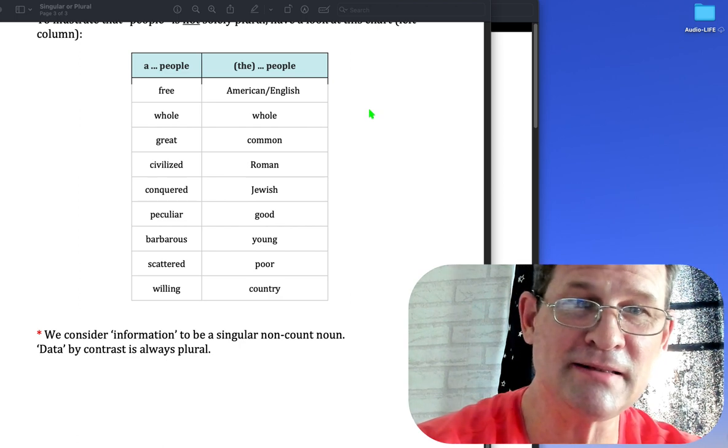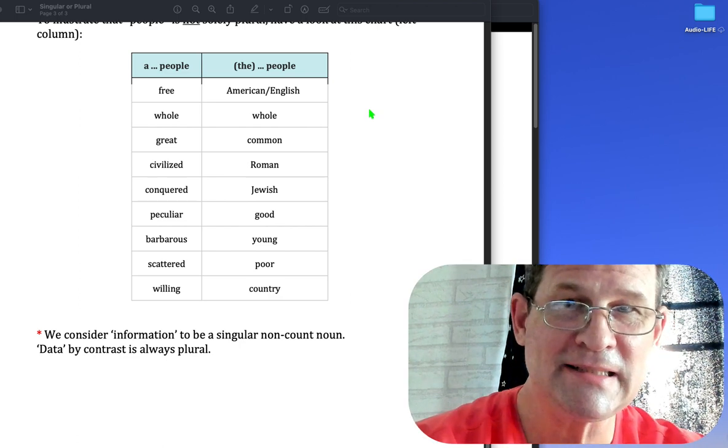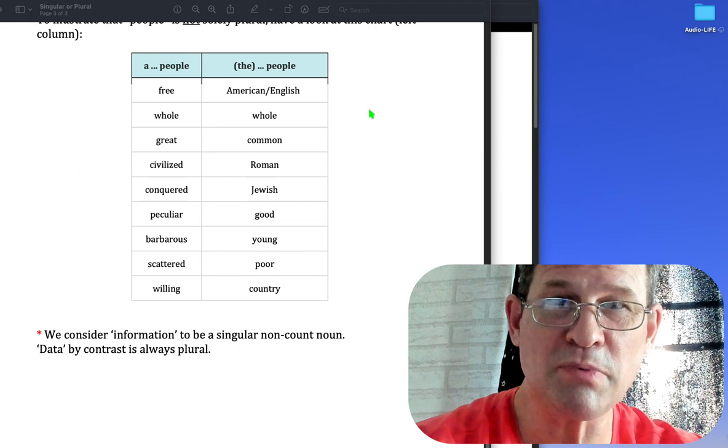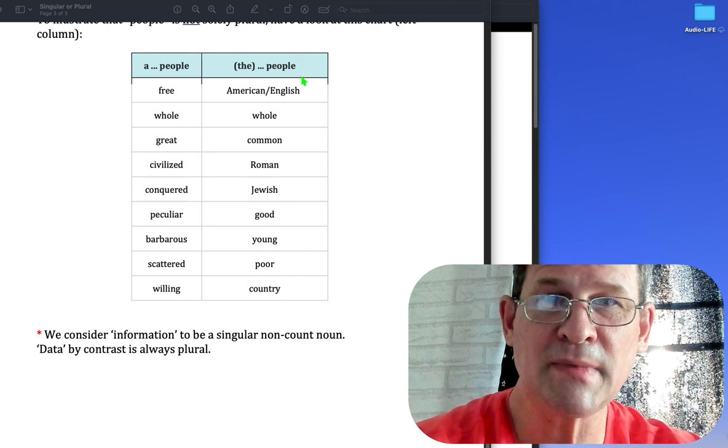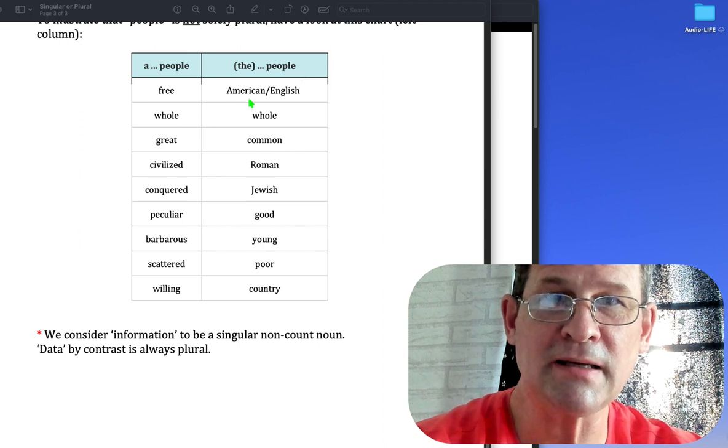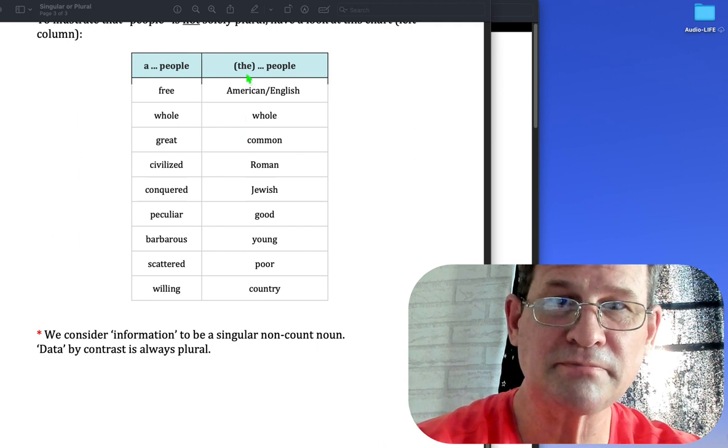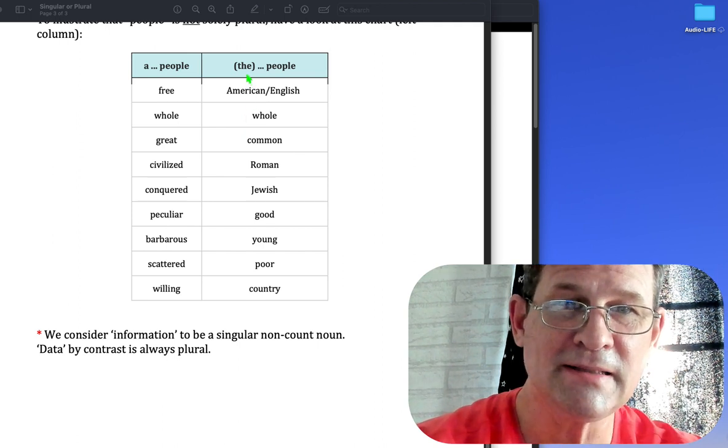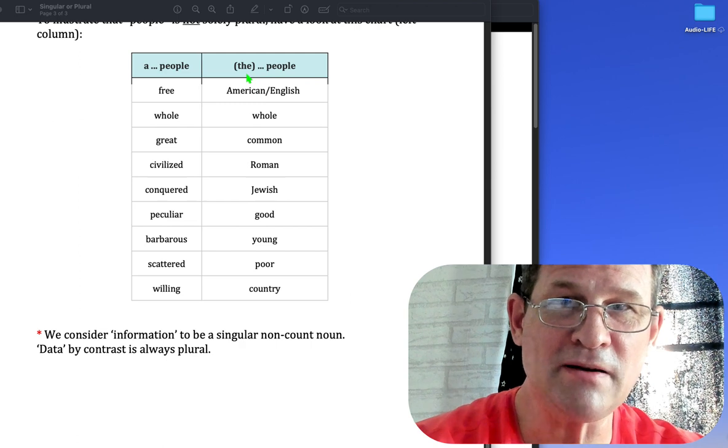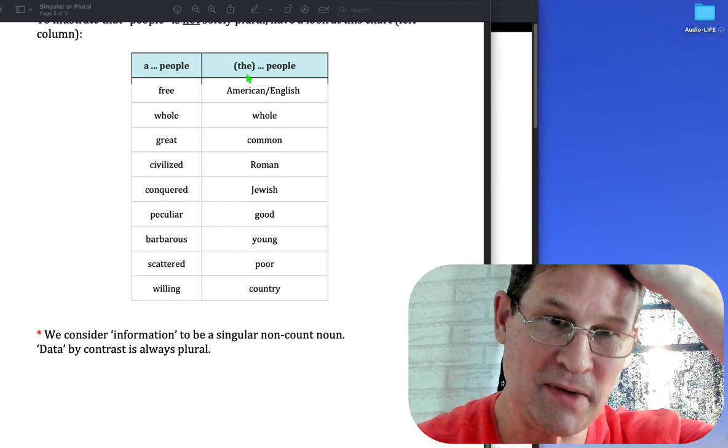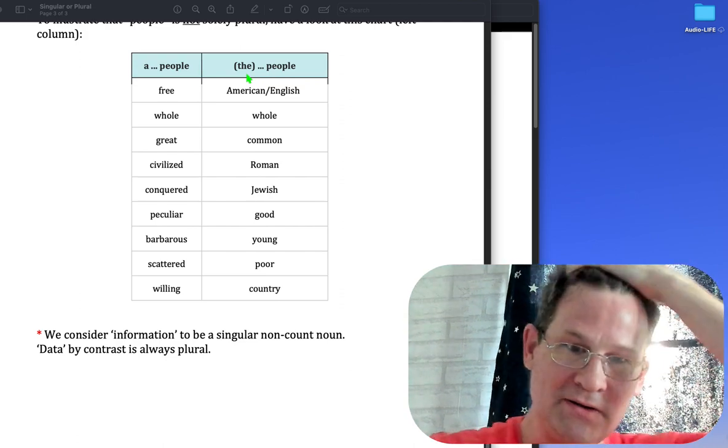This aspect is not dealt with in mainstream course books. Then we have the use of people like American people, English people, where the article can be used or not. There shouldn't be much debate over whether to use the or not, but go to my other video on the definite article about that.